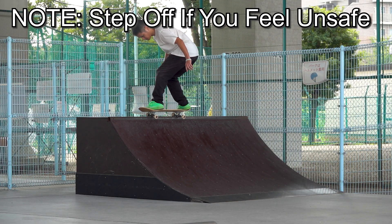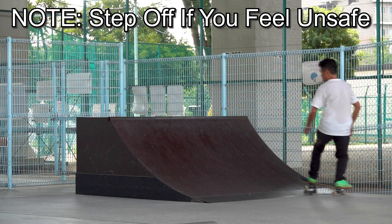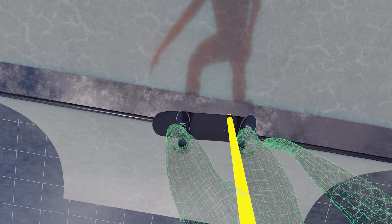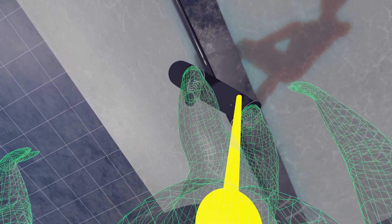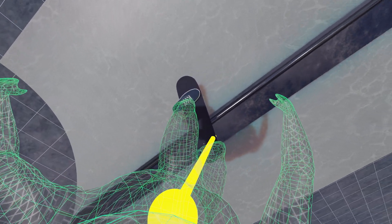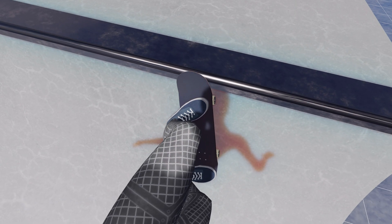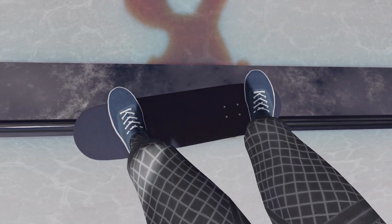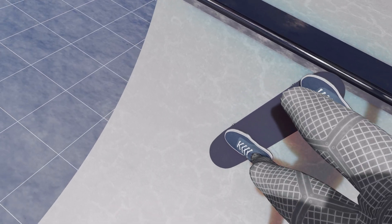If you feel unsafe, step off the board as soon as possible. In order to fight the fear of rolling back in, experiment with where you look. Some skaters find it helpful to look at the back truck. That way, they can visually confirm that toe side wheels clear the coping, which lowers the risk of hanging up.